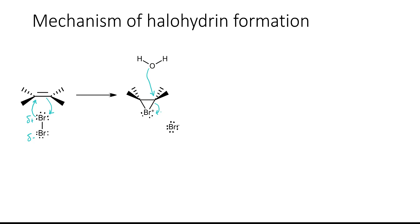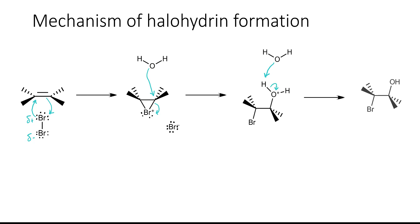This results in a molecule where one side contains the bromine atom and the other side contains an H₂O group. A water molecule then comes around and grabs one of the extra protons, moving those electrons onto the oxygen and giving us the final product, with bromine ion and H₃O⁺ as byproducts. Notice that this reaction always takes place in an anti fashion because of the three-membered ring intermediate with the bromine ion, and the back attack always results in the anti configuration of the product.